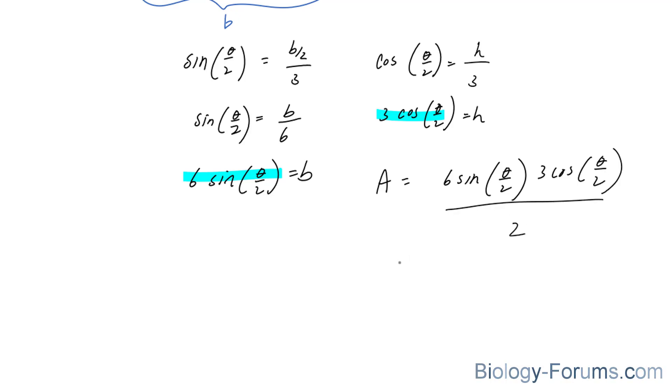Which gives us nine sine theta over two cosine theta over two.